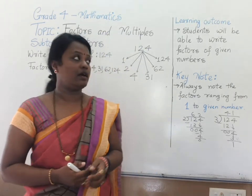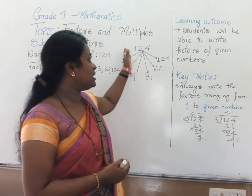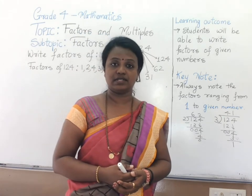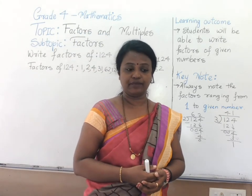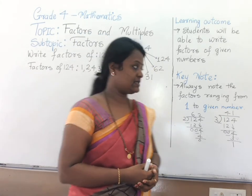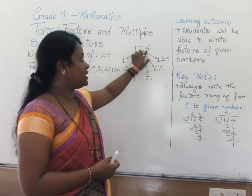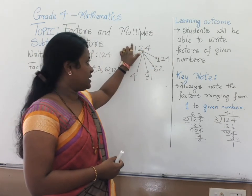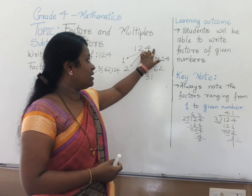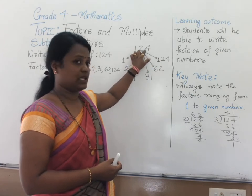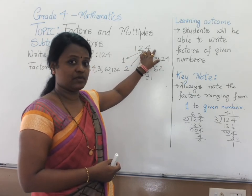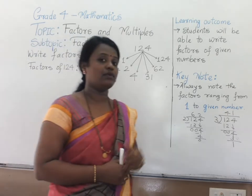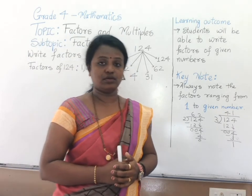Check for divisibility by 3: if you add all the digits, it should result in a multiple of 3. Let us see: 1 plus 2 plus 4. That is 1 plus 2 is 3, and 3 plus 4 is 7. As 7 is not a multiple of 3, we cannot proceed with 3.